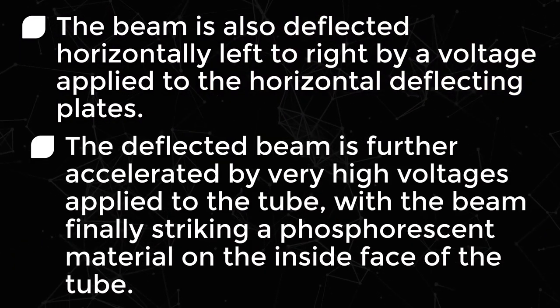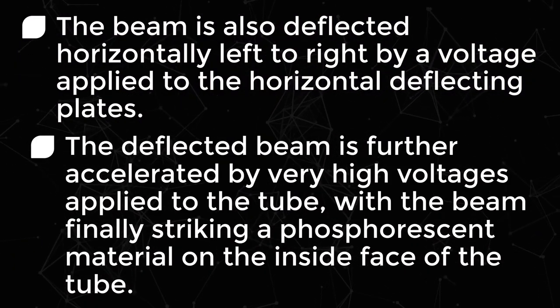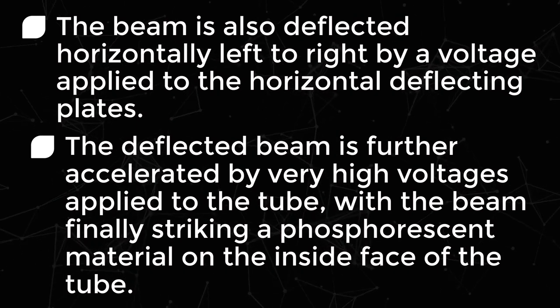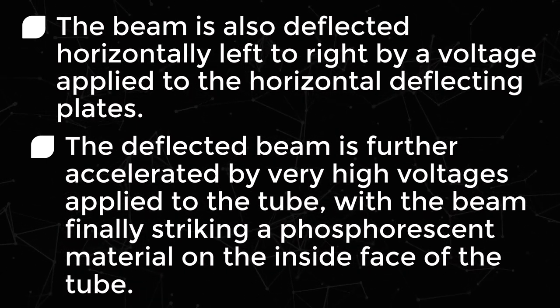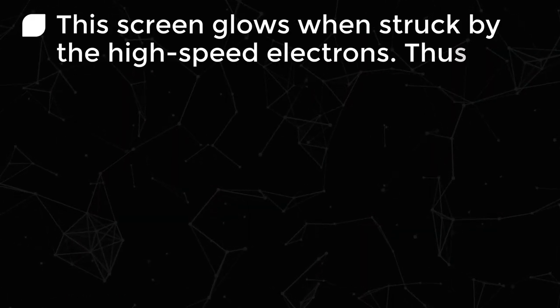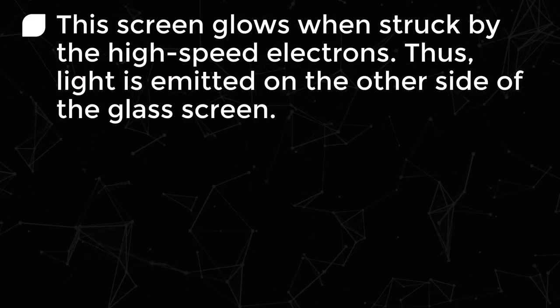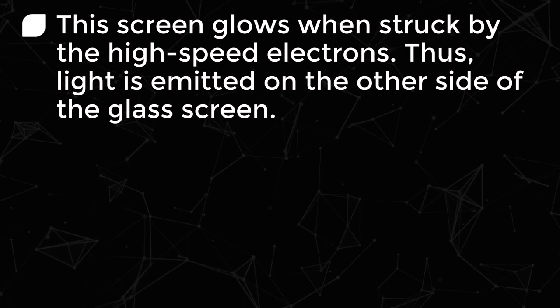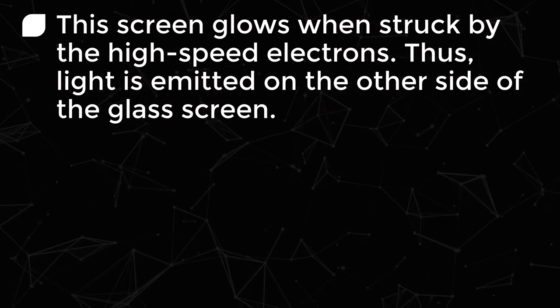The deflected beam is further accelerated by very high voltages applied to the tube with the beam finally striking a phosphorescent material on the inside face of the tube. This screen glows when struck by the high-speed electrons, thus light is emitted on the other side of the glass screen.